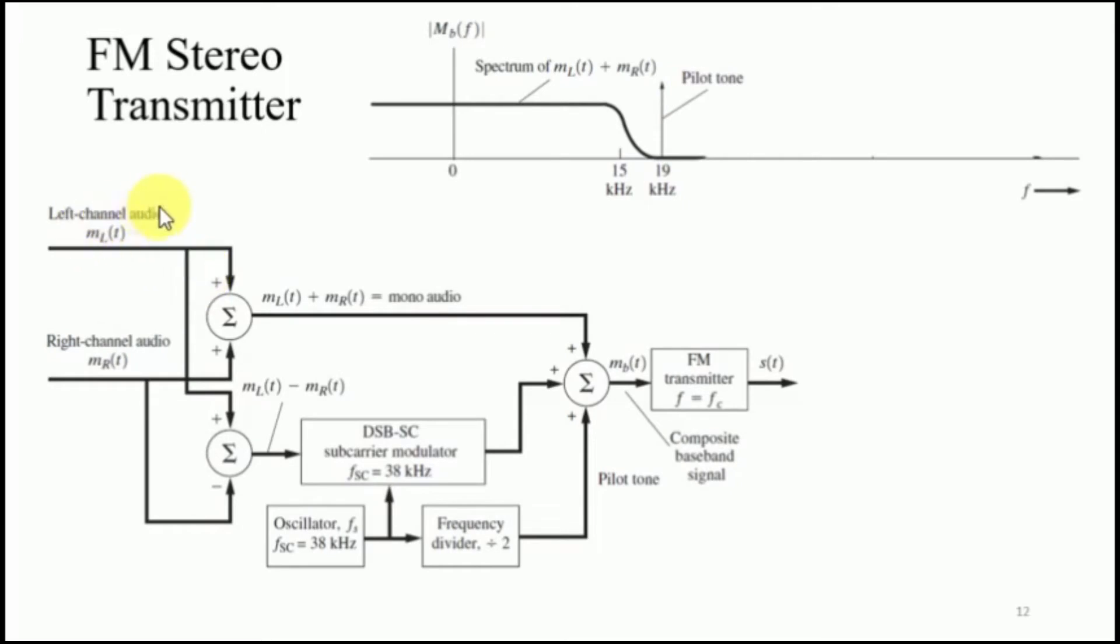Next, we plug a left channel audio that is ML of T and add it to a summation. Whereas, we take the right audio channel MR of T and also feed it to a summer with a negative polarity. This will become ML of T minus MR of T at the output of summation.